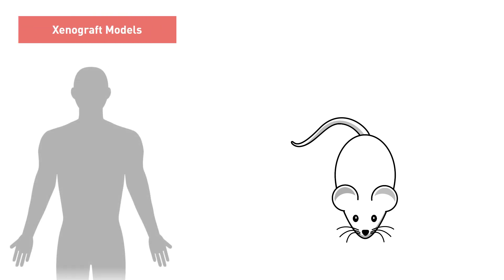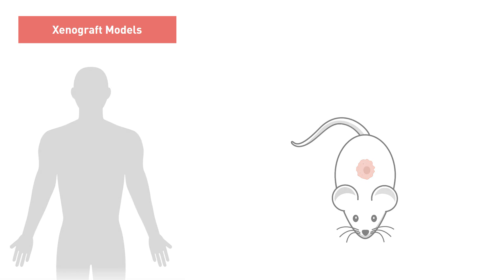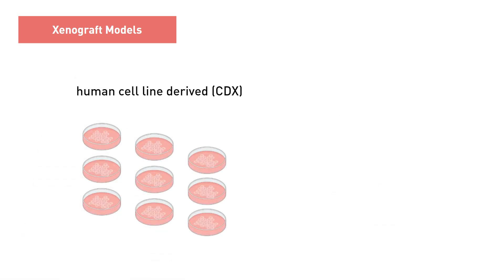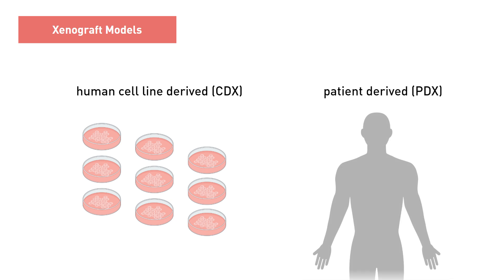The term xenograft refers to taking cells or tissue from one organism and inducing it to grow in a different organism. There are two types of xenograft mouse models: cell line xenografts, CDX, and patient-derived xenografts, PDX.